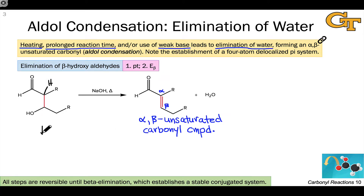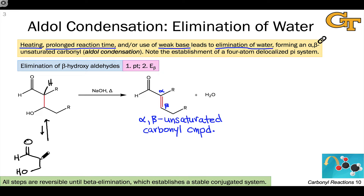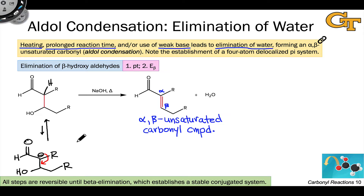Mechanistically, we first form the enolate of the product reversibly. Because sodium hydroxide is not strong enough to deprotonate alpha to a carbonyl completely, there will be a good bit of it left around even after we've formed a substantial amount of product. This is part of the reason why use of weak base tends to lead to aldol condensation reactions — the spontaneous elimination of water. This leaves us with an enolate intermediate in which we have a negative charge, a carbanion, adjacent to a hydroxyl group. Beta elimination of hydroxide from this intermediate produces the alpha-beta-unsaturated carbonyl compound product.